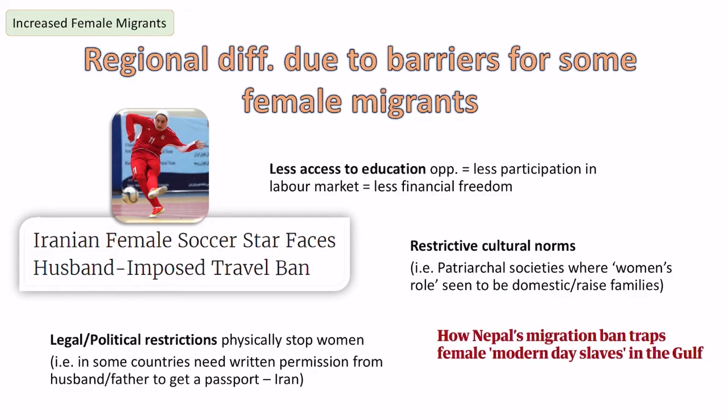Another example: in 2017, Nepal actually banned domestic female migrants from leaving to go and work in Gulf states like Saudi Arabia and the UAE. This was done under the guise of protecting them from being trafficked, but it essentially meant they couldn't move. So there are lots of barriers still preventing certain women from migrating in different parts of the world.